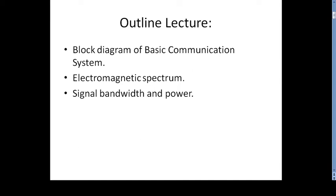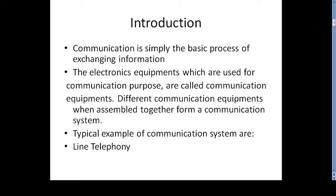The basic outline of this lecture covers: the block diagram of the basic communication system, the electromagnetic spectrum, and signal bandwidth and power. First, we introduce the basic block diagram of a communication system. Communication is simply the basic process of exchanging information. The electronic equipment used for communication purposes is called communication equipment, and different equipment assembled together forms a communication system. A typical example is line telephony.